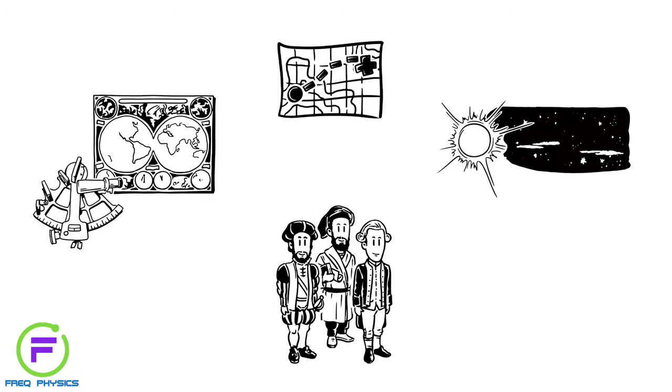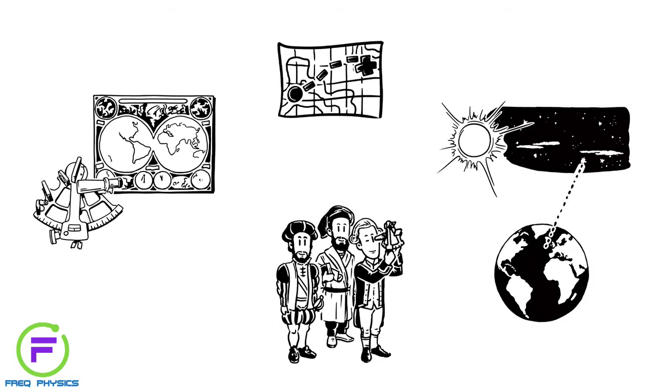By measuring their position and relation to key points on Earth, they could navigate and travel thousands of kilometres.